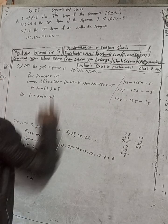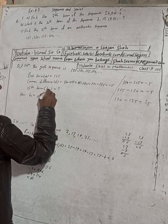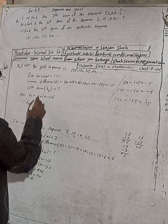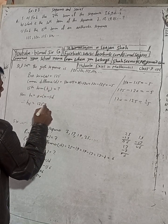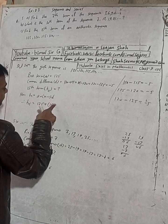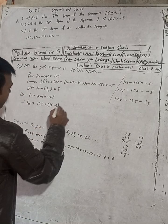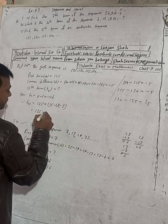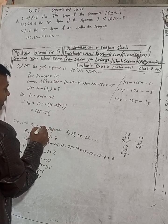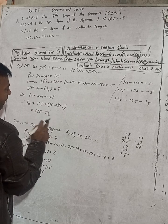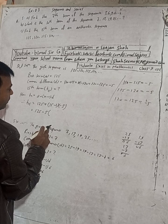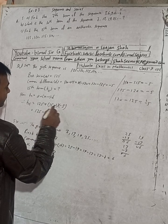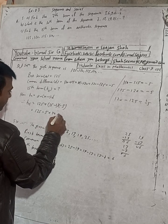We need to find T15. Using T(N) = A + (N − 1) × D: T15 = 125 + (15 − 1) × (−5). So this is 125 + 14 × (−5), being careful to include the negative sign in brackets.